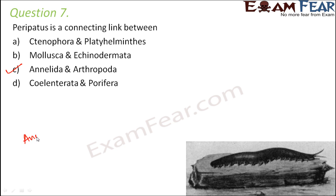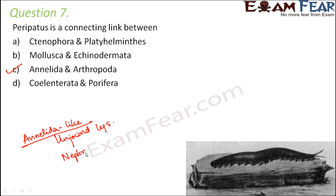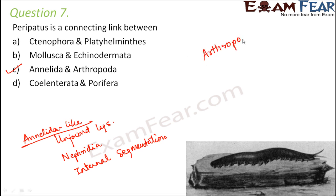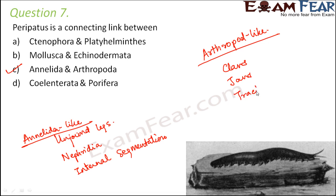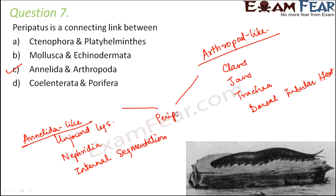Looking at its annelid-like characters: it has unjointed legs, the presence of nephridia which act as the excretory organ, and presence of internal segmentation on the body — all of these resemble annelids. Whereas its arthropod-like characters include the presence of claws, jaws, presence of trachea, and the presence of a dorsal tubular heart — all of these resemble arthropods. Since Peripatus has features of both annelids and arthropods, it is called a connecting link between them.